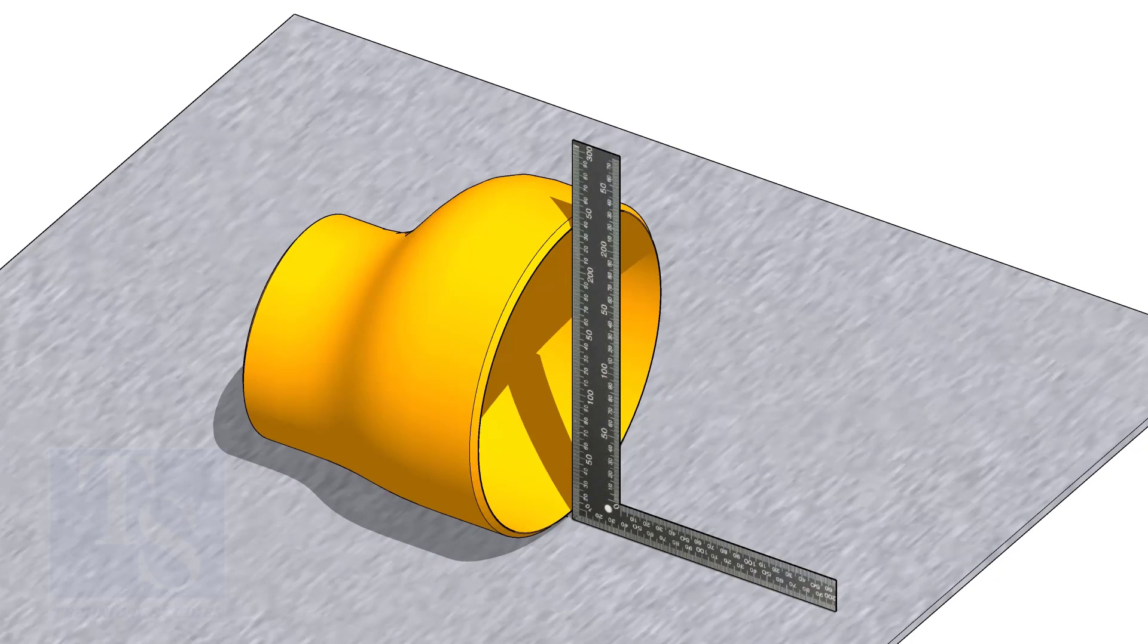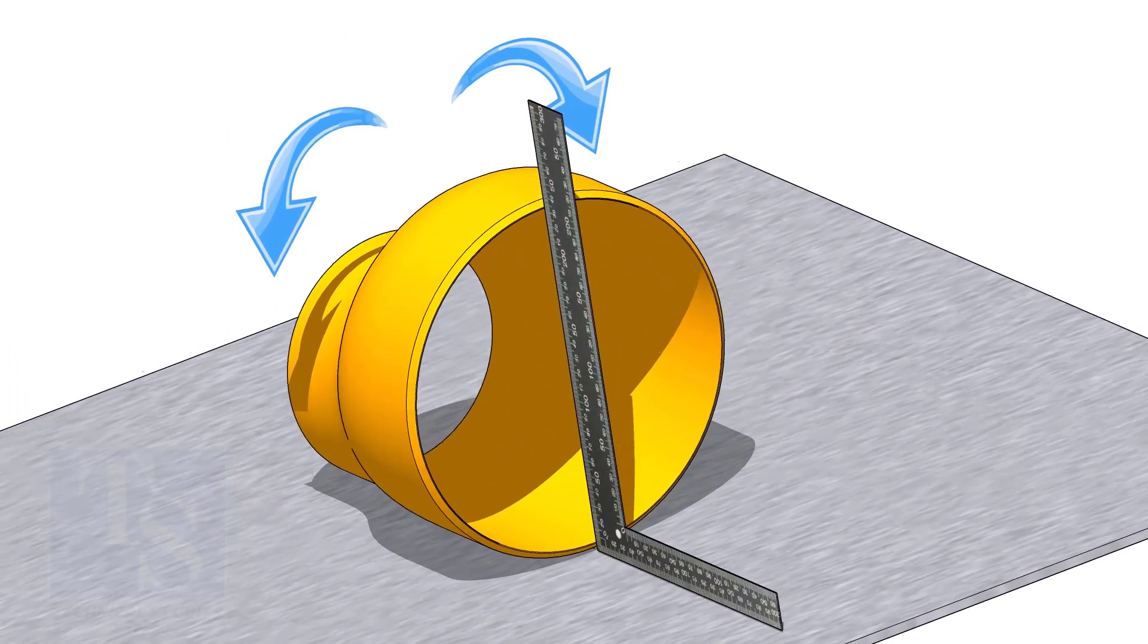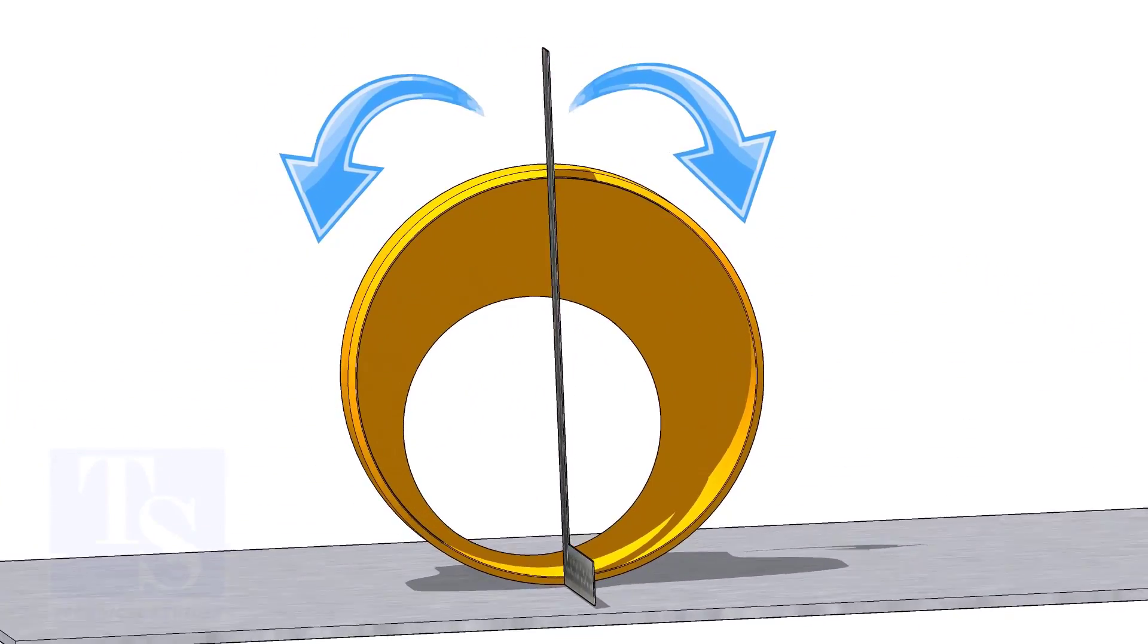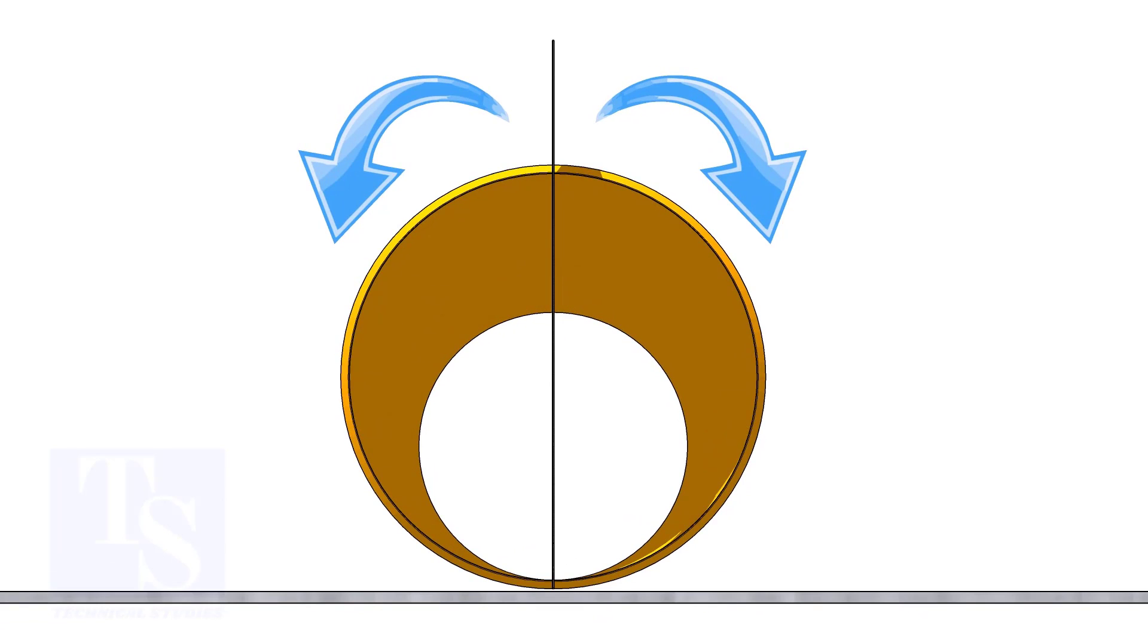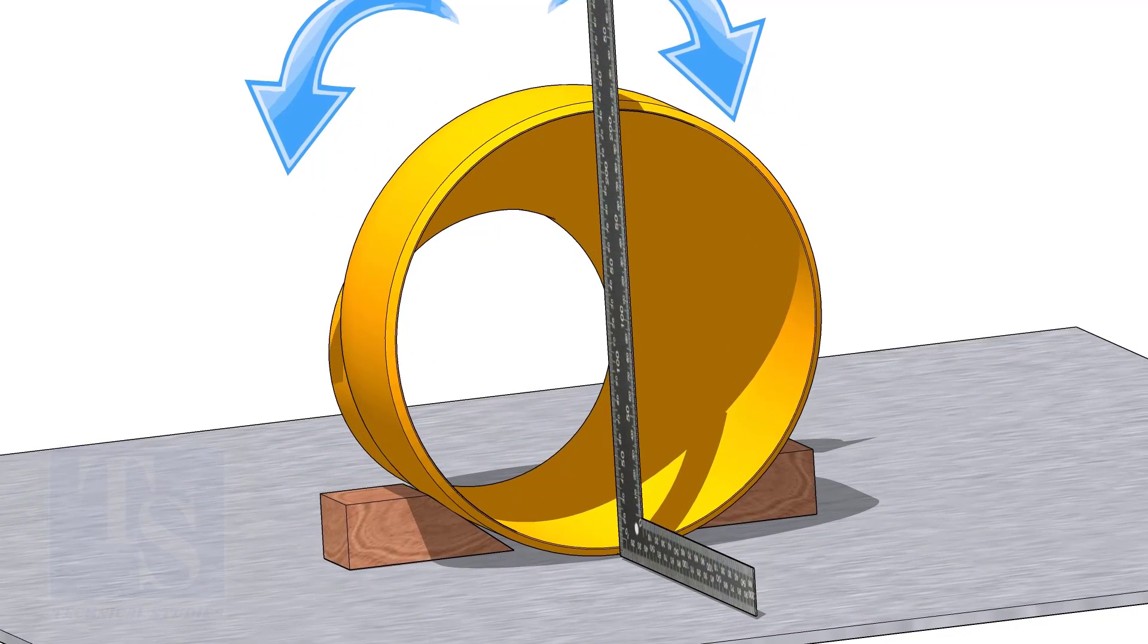Put the reducer on a straight plate. Hold a right angle at the large side of the reducer and gently rotate the reducer back and forth until the face of the reducer is square to the right angle.